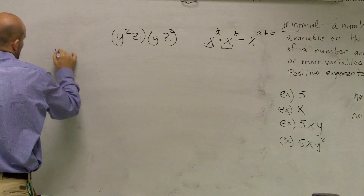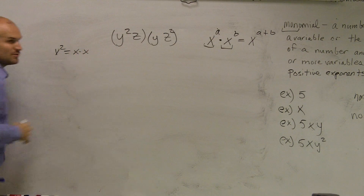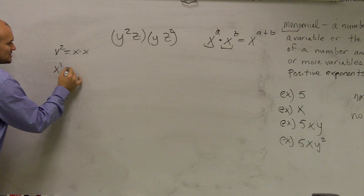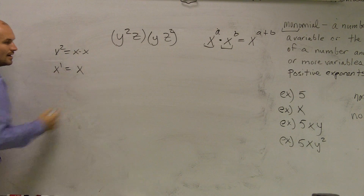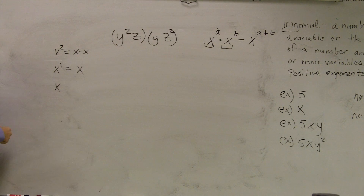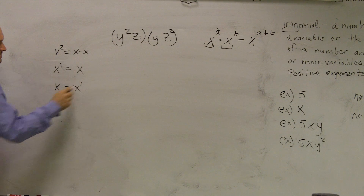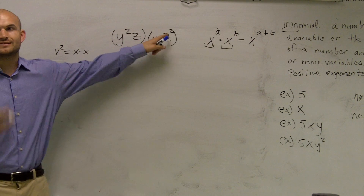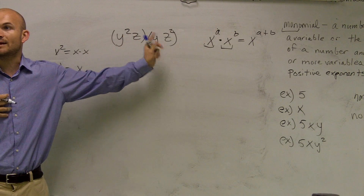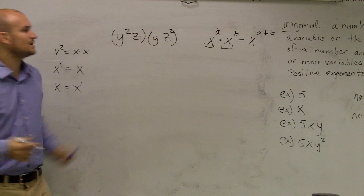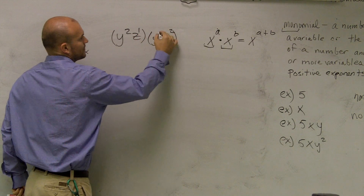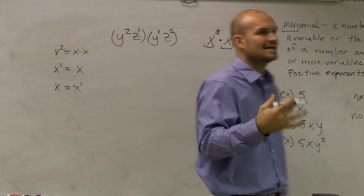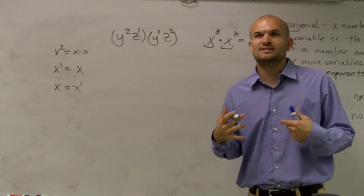Actually, before I even get to that — as a review — x squared equals x times x, and x to the first equals just x. So if I just write x, I can also say that's the same thing as x to the first. So if it helps, whenever you have a variable with no exponent, you can put a one up there. You might want to do that whenever you encounter a variable in these simplification problems.